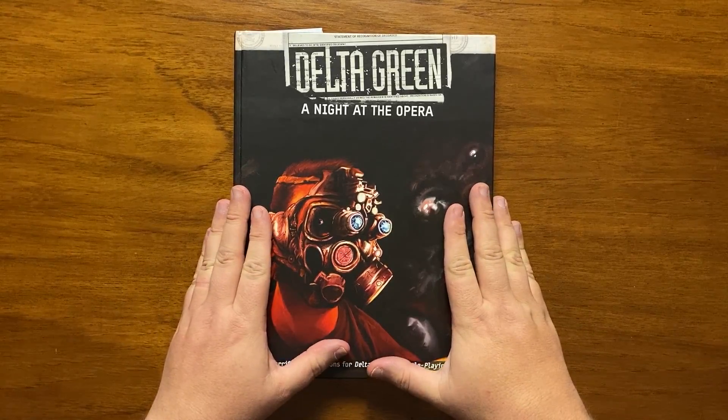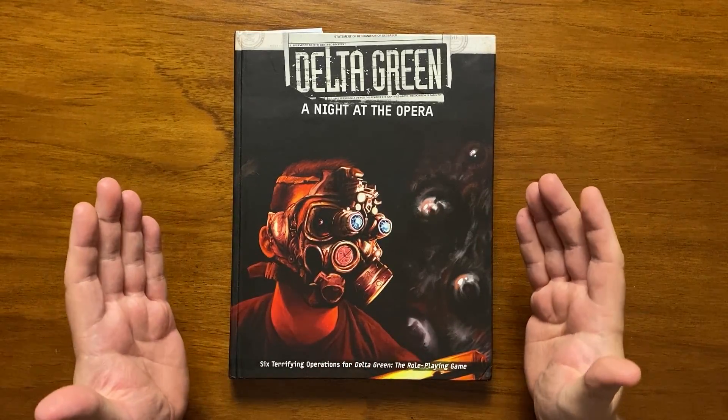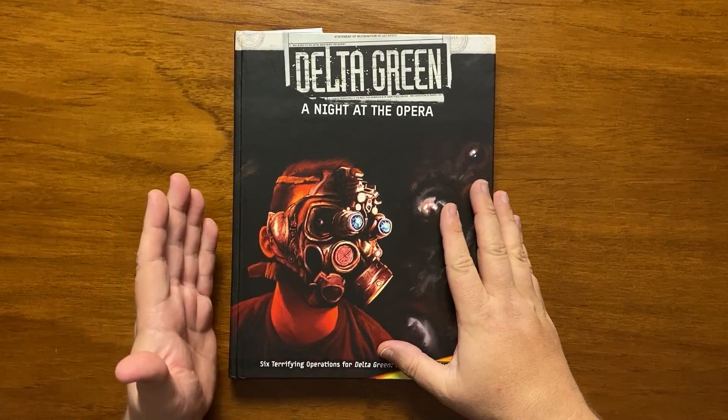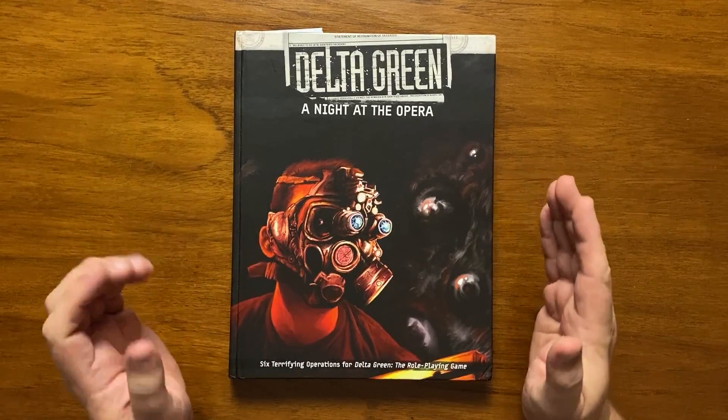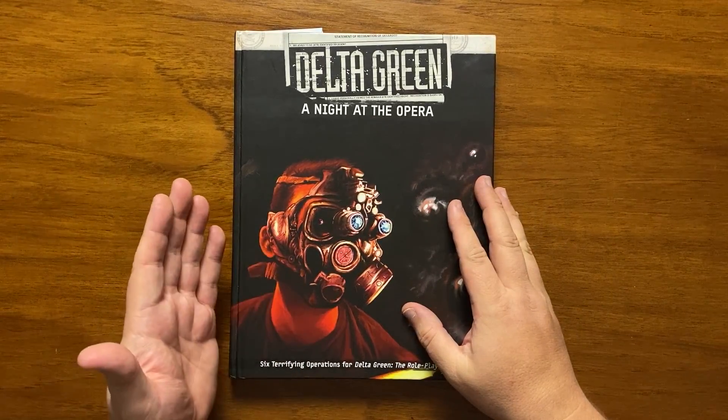Hello and welcome to Bud's RPG Review where I give my thoughts on role-playing games, card games and board games. Today's review is the sixth and final scenario from A Night at the Opera, Observer Effect, for Delta Green the role-playing game by Arc Dream Publishing.